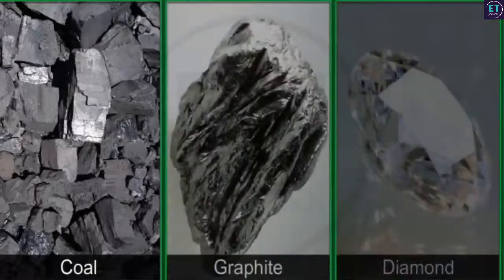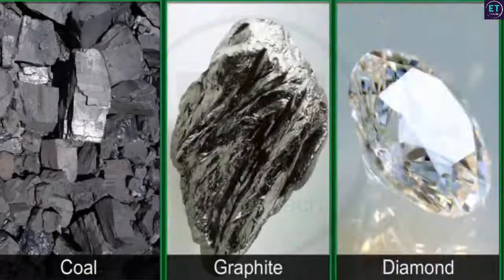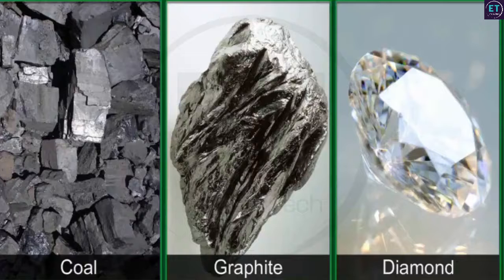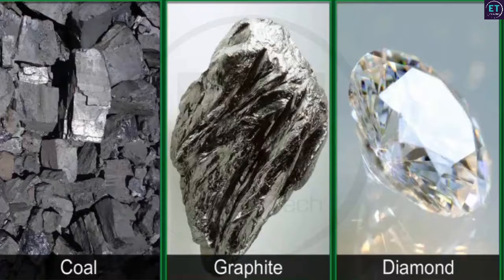Here are three minerals made of carbon. Observe how they differ widely in their hardness, crystals, luster and density due to the difference in their conditions of formation.